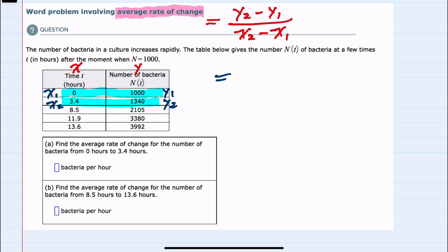We would start with y2, which is 1340, subtract y1, which is 1000. And then in the denominator, x2 is 3.4 minus x1, which is 0.